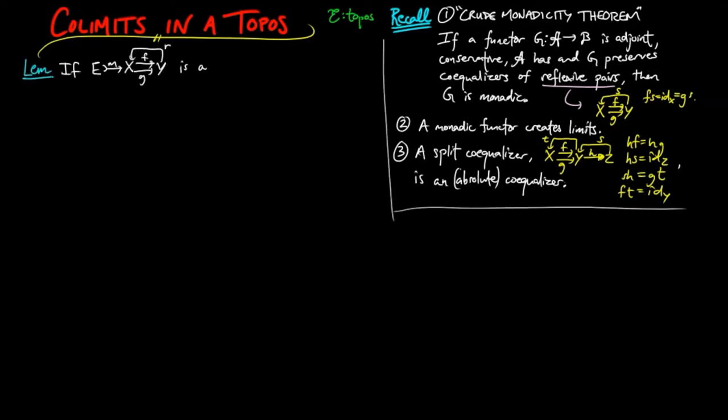If the following is an equalizer diagram of a co-reflexive pair, i.e. there exists a morphism R such that RF is equal to the identity on X, which is equal to RG, then the following is a pullback.